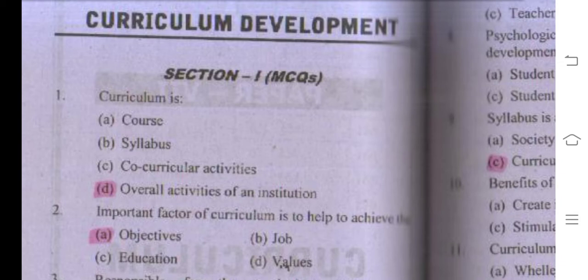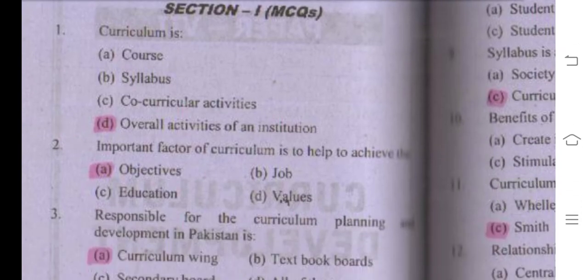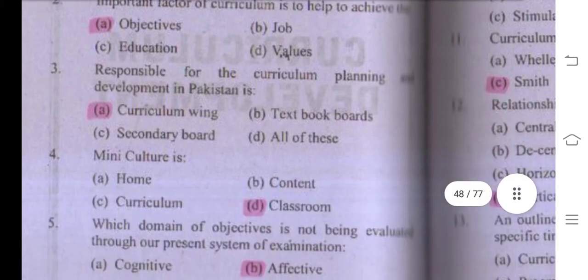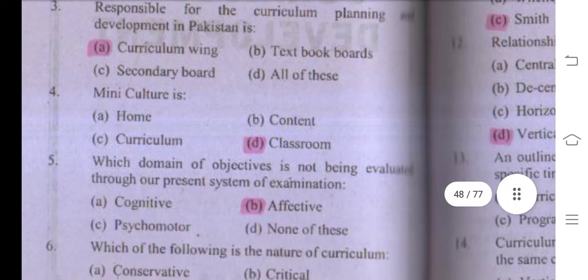...is to help achieve objectives — the right answer is objectives. Number three: the body responsible for curriculum planning and development in Pakistan is the curriculum wing. Number four: mini culture — the right answer is classroom.